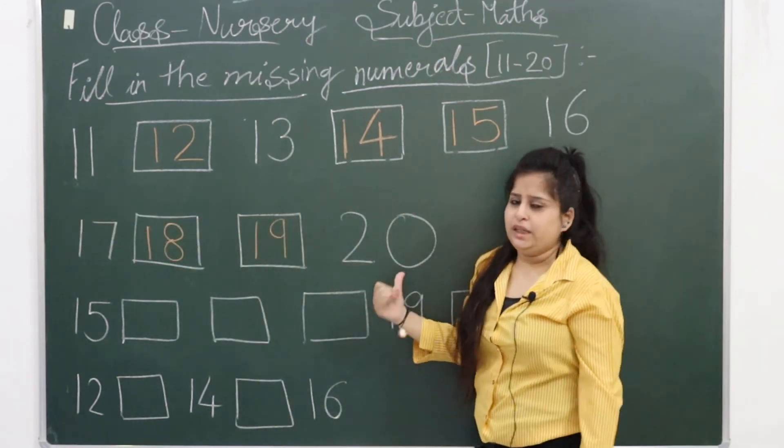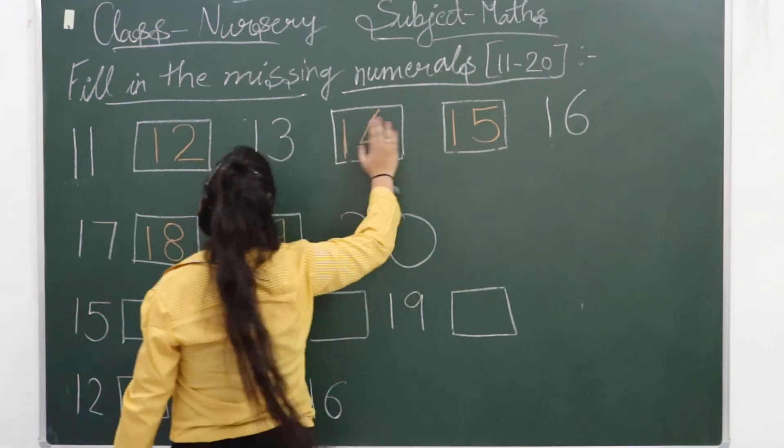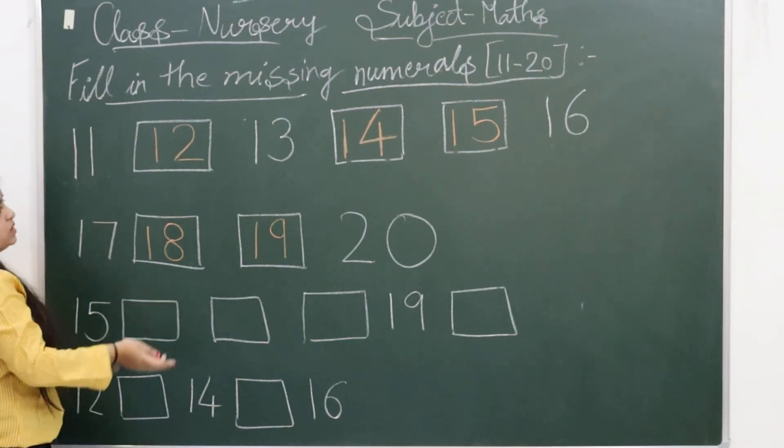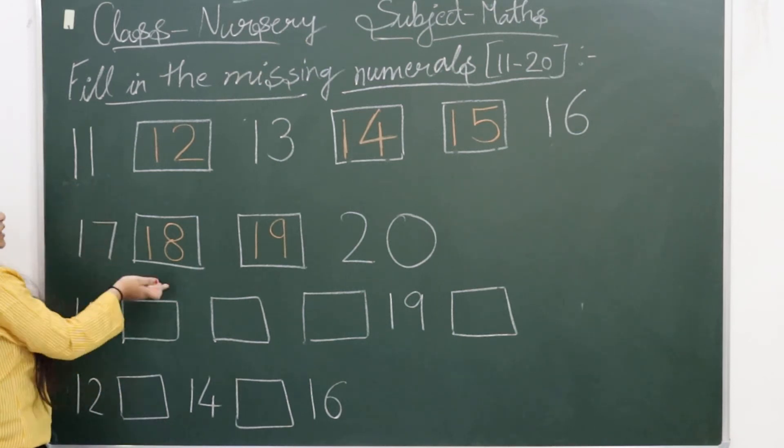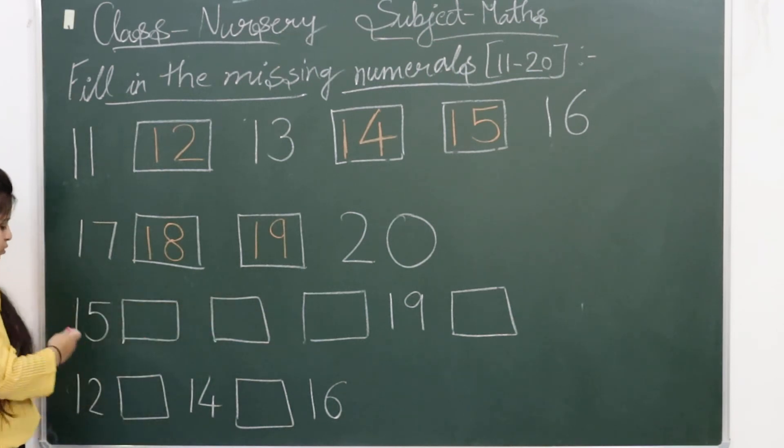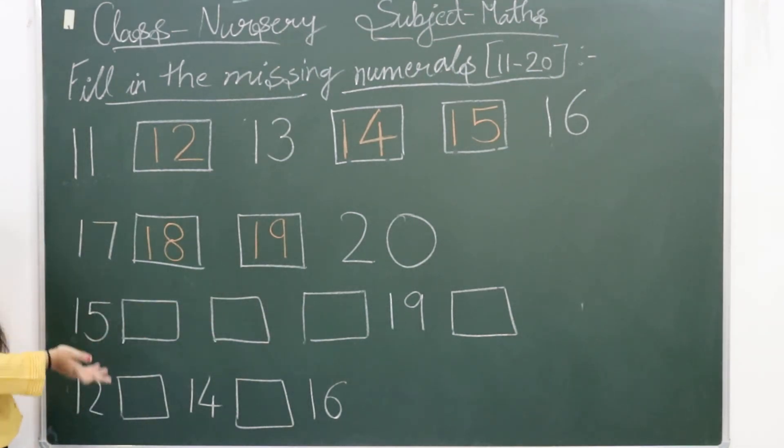Okay, in the last row, this is 1-5 fifteen. After 1-5 fifteen, what comes? One more thing, children: it is not necessary that counting always starts from 1-1 eleven. It can start from any number. Like after 1-7 seventeen, what comes? 1-8 eighteen. So you should know what comes after, not just in combination, okay?